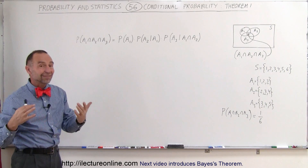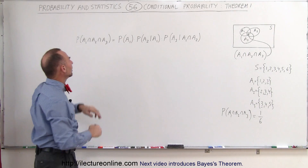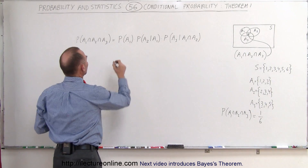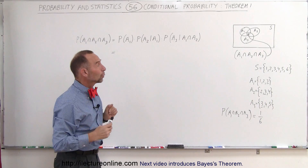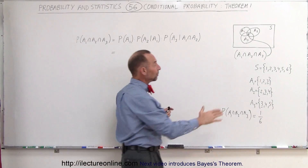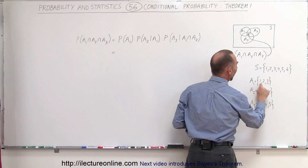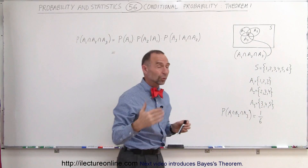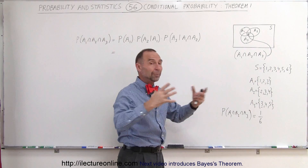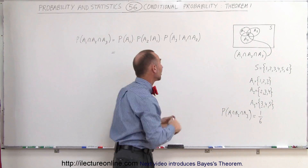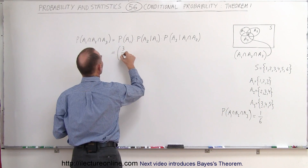Let's verify using the theorem. First, what is the probability that A1 will occur as an independent event? The sample space has six possible outcomes, and A1 contains three of those — 1, 2, or 3 — so the probability that A1 occurs, independent of anything else, is 3 out of 6.